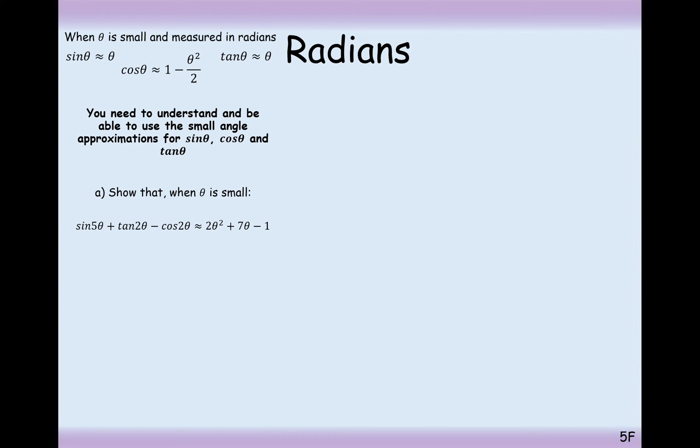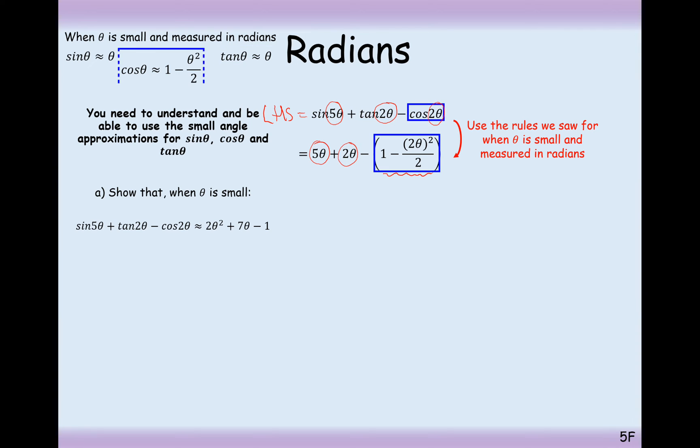Show that when theta is small, that this left-hand side is approximately equal to the right-hand side. Sort out your left-hand side first. First, I'd have LHS, standing for left-hand side, equals. So it's sine 5 theta, so that can be replaced by 5 theta. Tan 2 theta, so that can be replaced by 2 theta. But cos is the weird one. That needs to be replaced by 1 minus 2 theta squared over 2. And simplifying what we've got here, expand the brackets, and this is what we get: 7 theta minus 1 plus 2 theta squared. We can rewrite this as the right-hand side, so equals RHS, right-hand side.